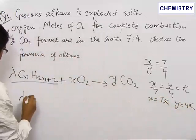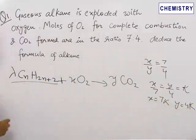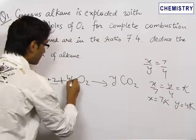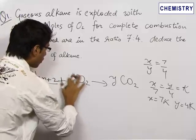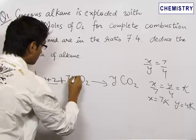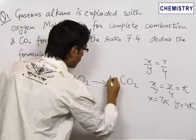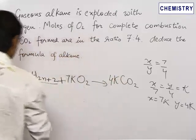Let us rewrite the equation as lambda into CnH2n plus 2 plus 7k times oxygen yielding 4k times CO2.